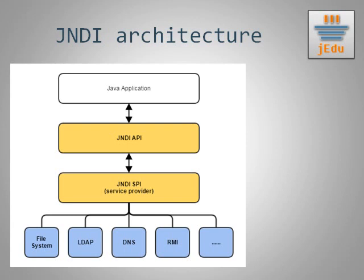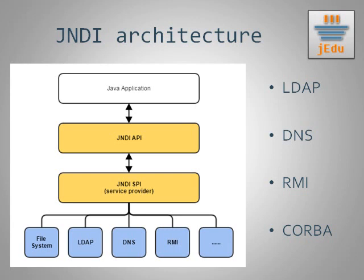JDK contains by default four service providers, allowing you to work with: LDAP protocol, DNS service, RMI service, and CORBA. An important feature of JNDI is that you can also create your own service providers for custom naming services. There are classes in the JNDI SPI — Service Provider Interface — that help with this. For example, object factories let you create and return an object as the result of a lookup operation based on internal state stored in the naming service. The opposite is also possible: given an object that needs to be stored, you can save its state instead of the object itself, with the help of state factories.